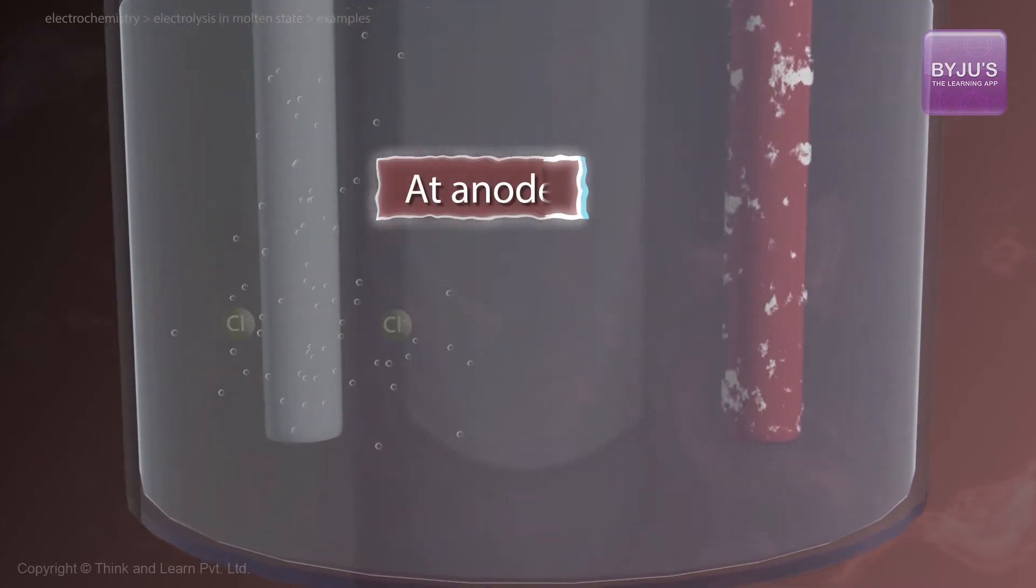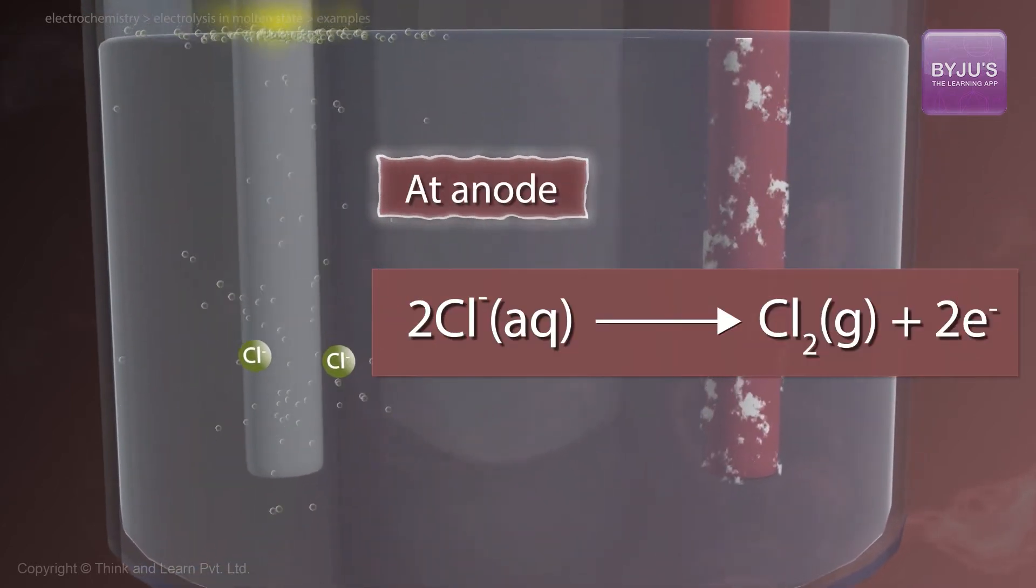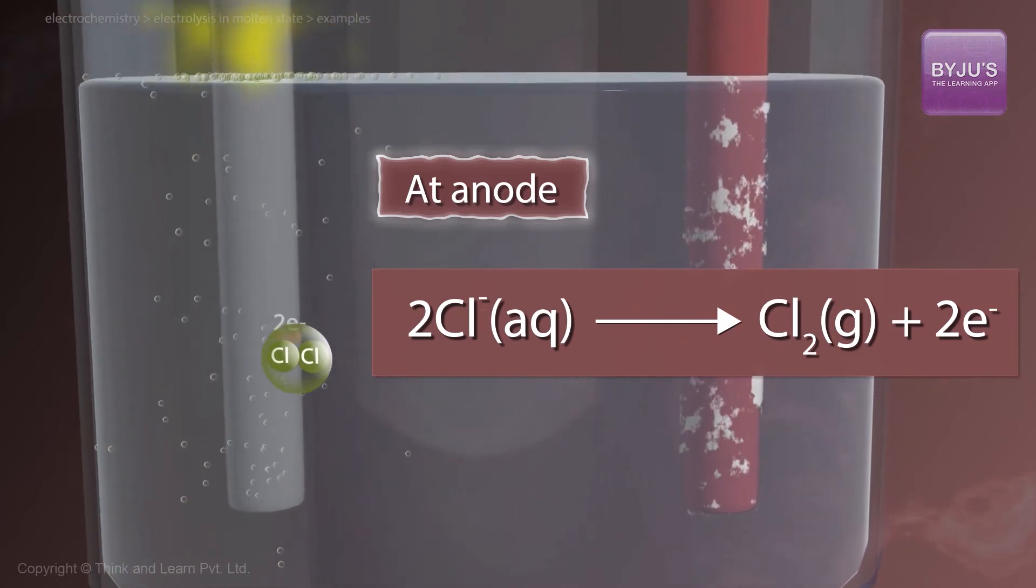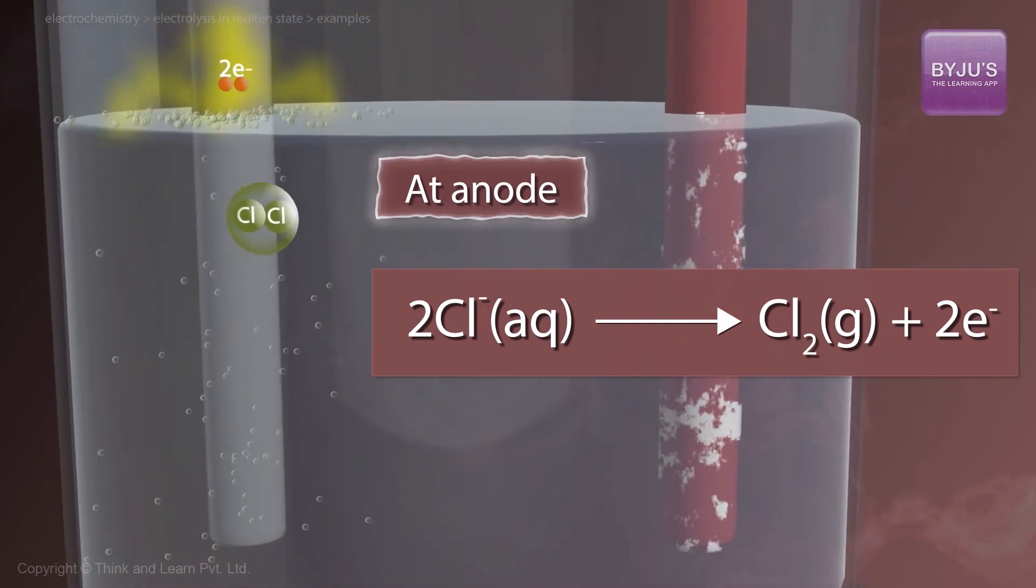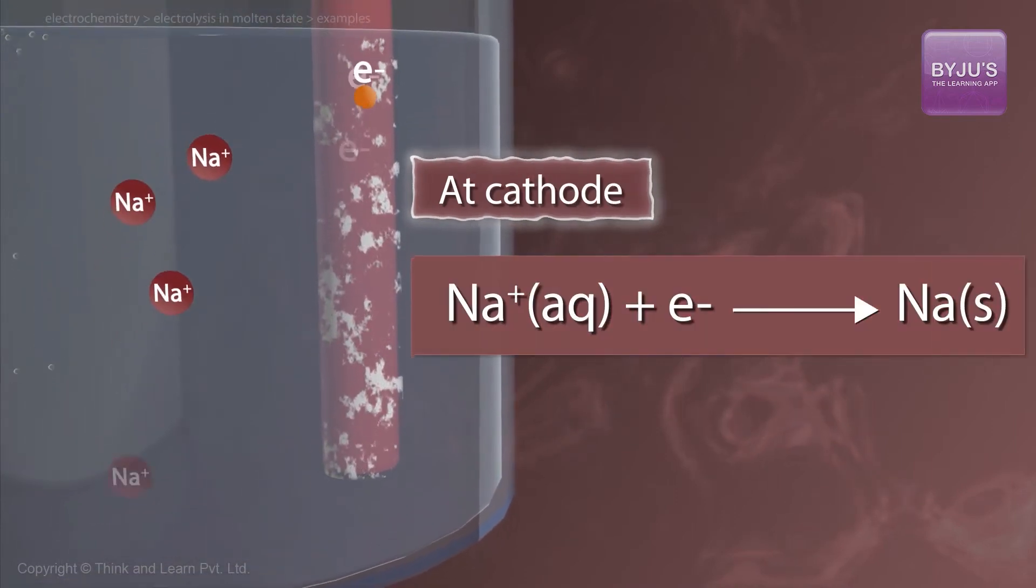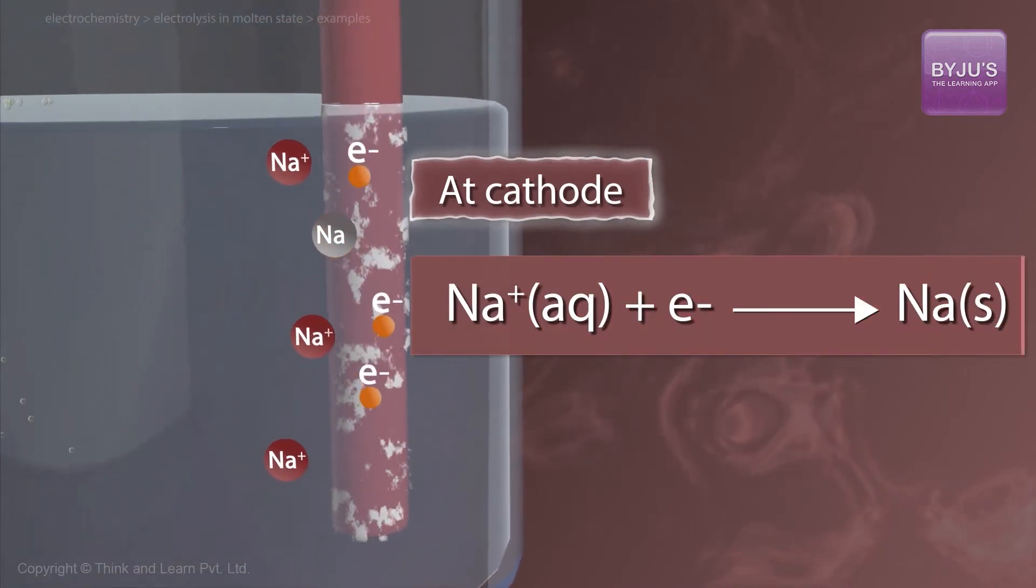At the anode, 2 Cl- ions convert into Cl2 gas and 2 electrons, which is oxidation. At the cathode, Na+ ions get converted into Na, which is reduction.